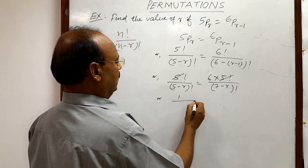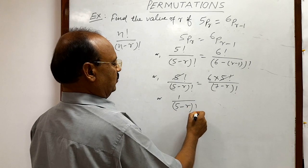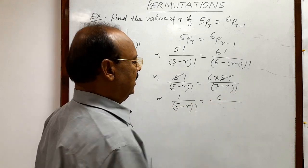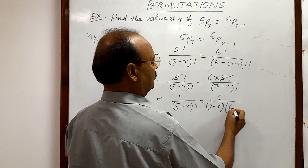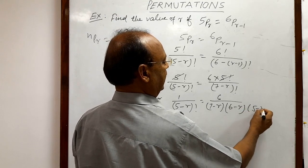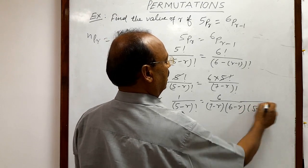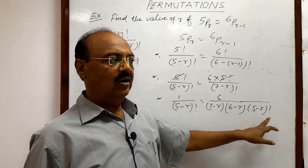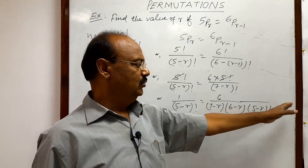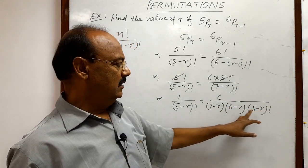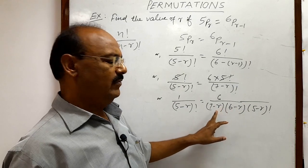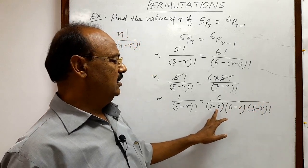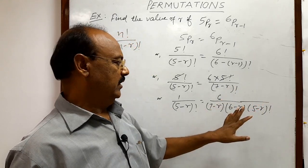This is equal to 6 by—similarly, this (7 minus r) factorial can be written as (7 minus r) into (6 minus r) into (5 minus r) factorial. I hope you have understood it, because in (5 minus r) factorial we are having all multiplications starting from 1, 2, 3, 4 up to 5 minus r, and another factor is 6 minus r and 7 minus r. So this is a continuation of product 1, 2, 3, 4 up to 7 minus r. So this is nothing but (7 minus r) factorial.